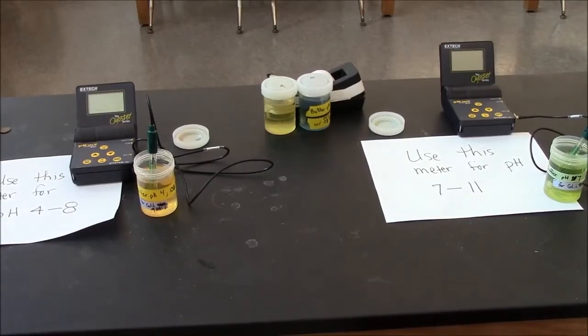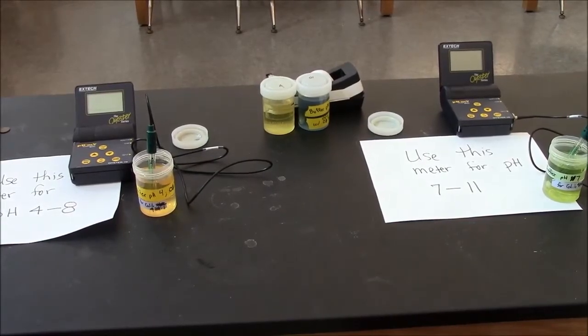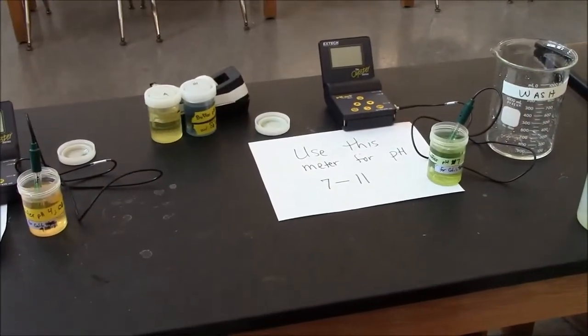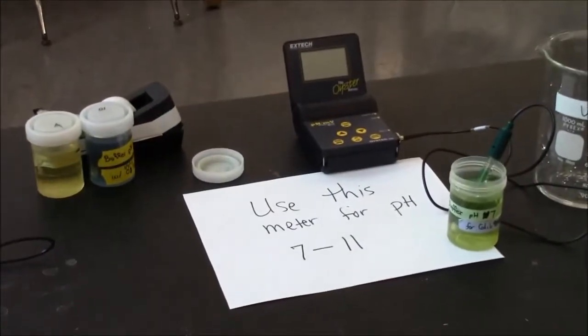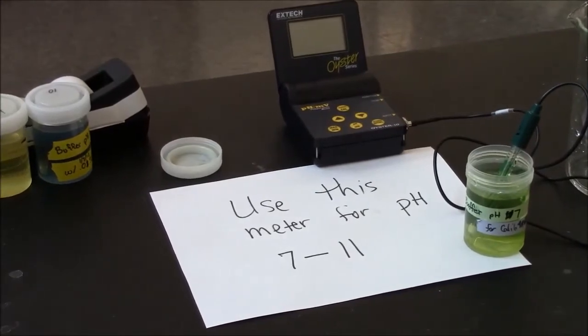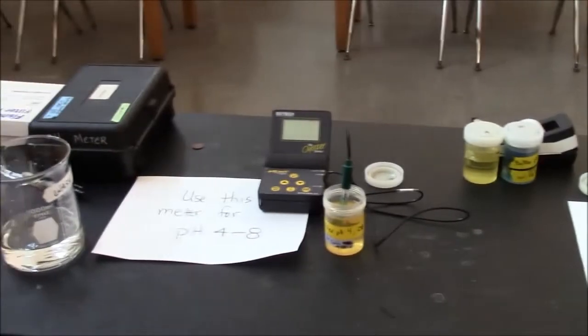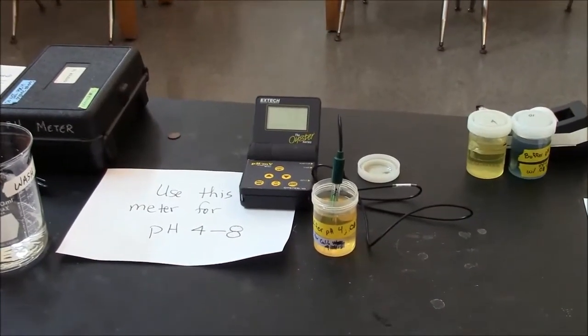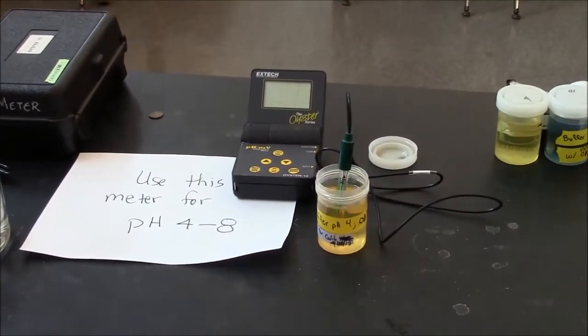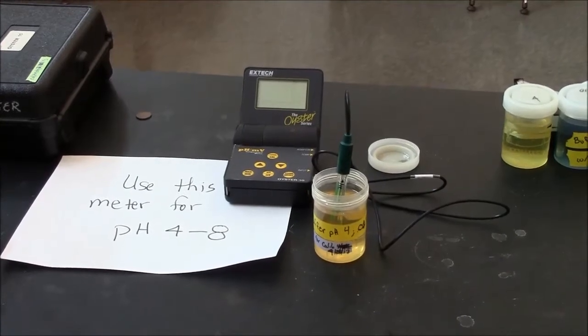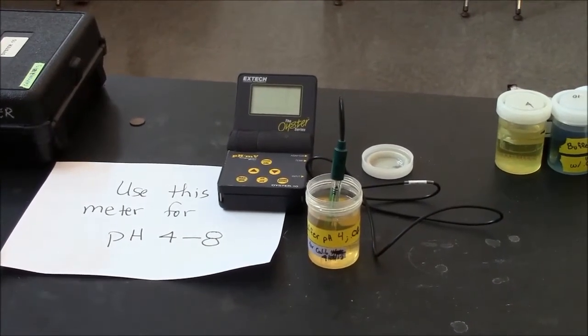There are two pH meters set up for your use. The one on the right is set up to measure between pH 7 and 11. It's calibrated for that pH range. The one on the left is calibrated for the lower pH range of 4 to 8. So try to use the correct meter based on the pH of your buffer.